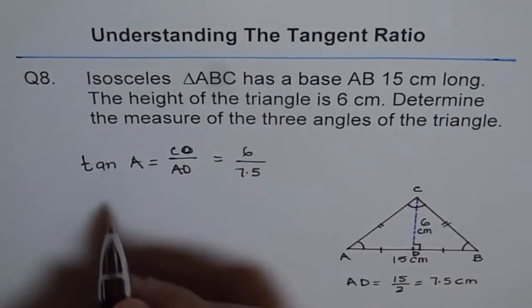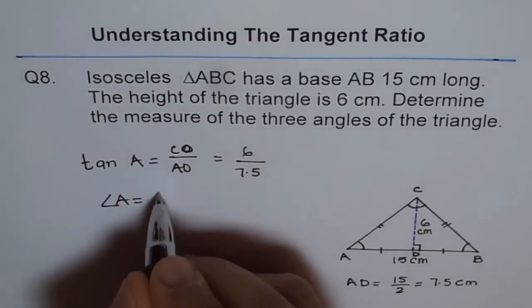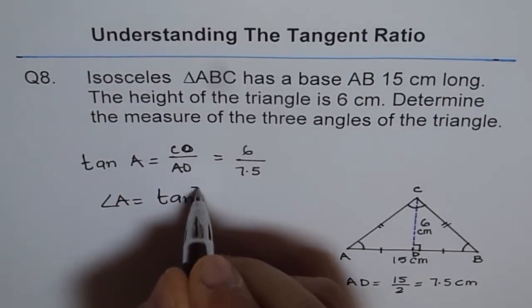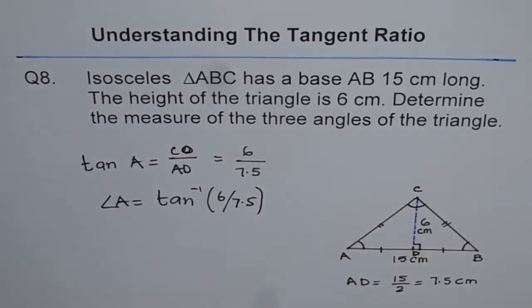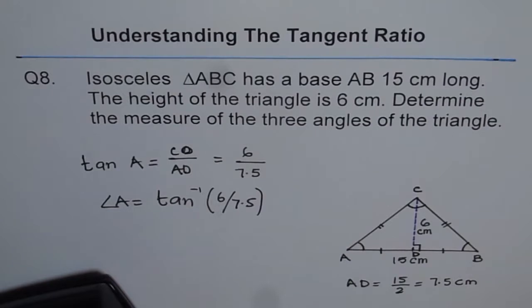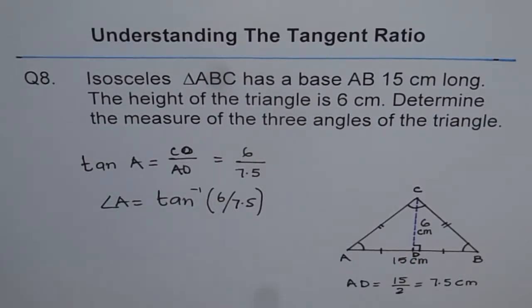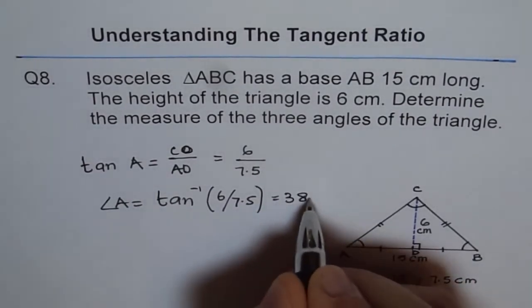To find the angle A, we can do tan inverse. So angle A equals tan inverse of 6 over 7.5. And we'll round our answer to a whole number. So we'll do tan inverse of 6 divided by 7.5 equals 38.659. So this equals 38.65.